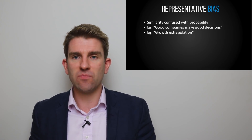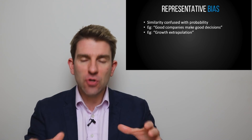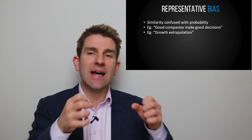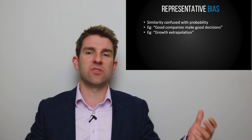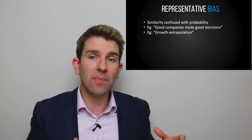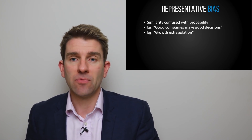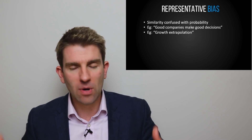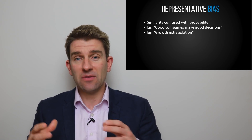So representative bias is this: it's similarity confused with probabilities. What does that mean? It's confusing similar instances with the probability of something happening again. The best way to illustrate this is with an example. An example would be: it's a good company, therefore they make good decisions. You already know the company's good for whatever reason and you're assuming they're going to make good decisions.